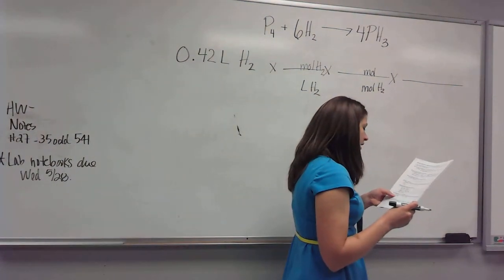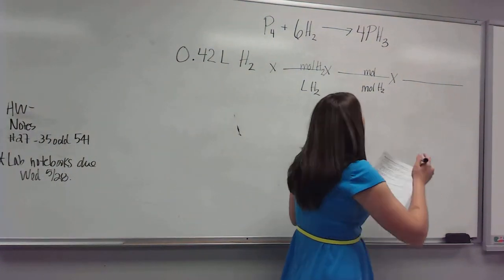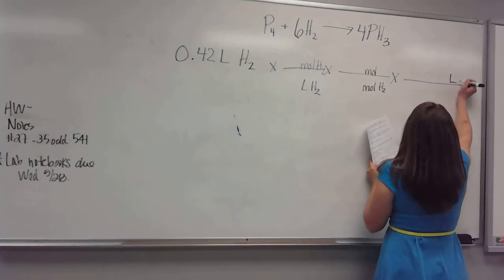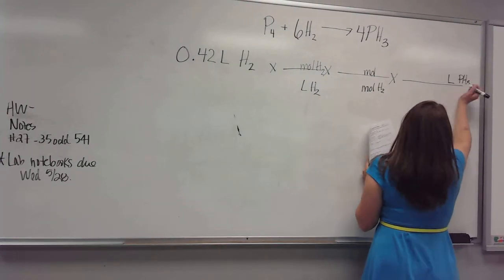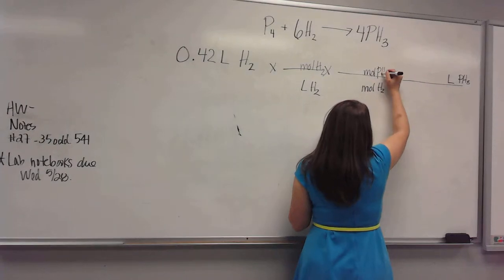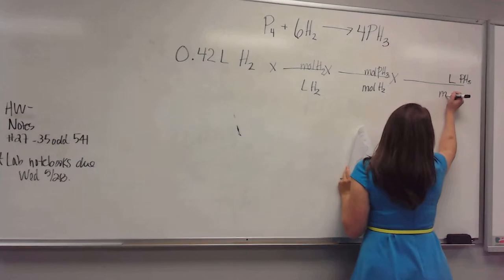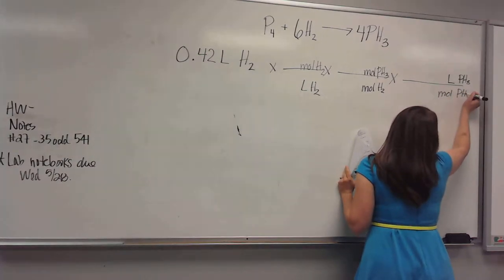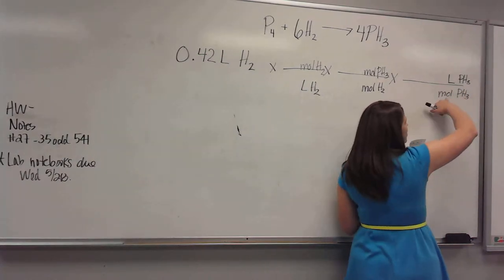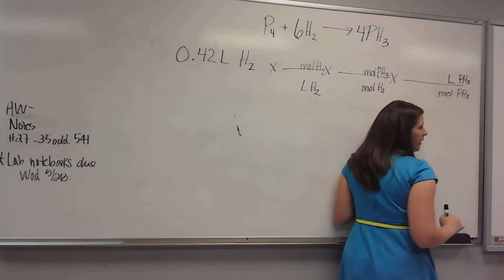The question said, how many liters of phosphine? So we want, eventually, liters of this PH3. So first we've got to change it to moles of PH3. And then whatever's on top goes on bottom because we want it to cancel out. And we can only change one thing at a time, so we're changing moles to liters and leaving the compound the same.